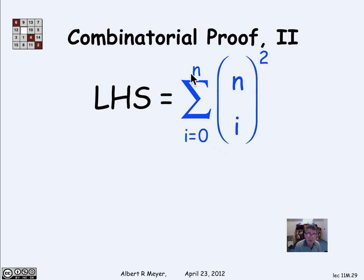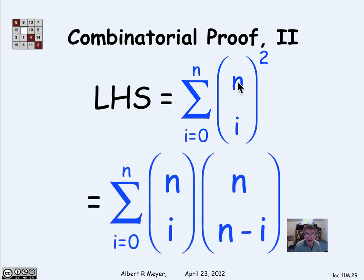Well, here I'm summing from i equals 0 to n of n choose i squared. Well, notice that n choose i, of course, is the same as n choose n minus i.